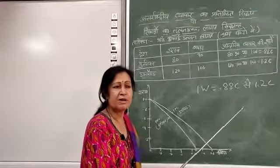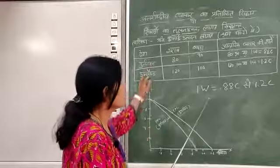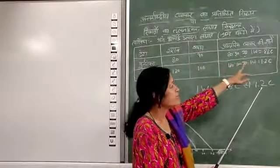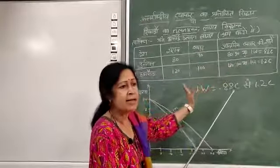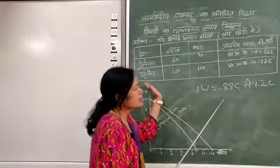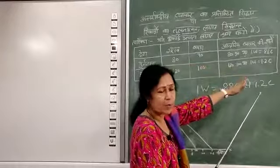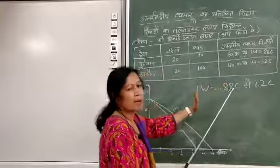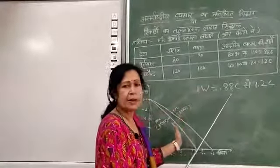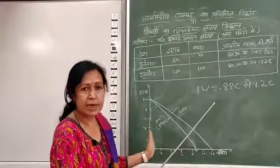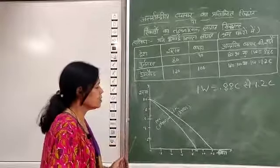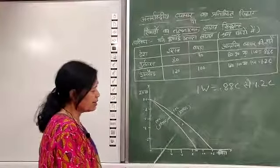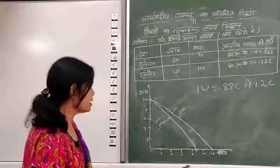उस स्थिति में दोनों देशों को अन्तर्राष्ट्रीय व्यापार से लाभ होगा। अगर पुर्तगाल को एक इकाई शराब के बदले में 0.88C से कुछ भी ज़्यादा मिलता है तो उससे लाभ होगा। इसी तरह इंग्लैंड एक इकाई शराब के बदले में 1.2C तक कपड़ा दे सकता है — इससे अगर उसे कम देना पड़े तो उस स्थिति में उसे लाभ होगा। इस चीज़ की हमने व्याख्या इस diagram द्वारा की है।